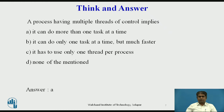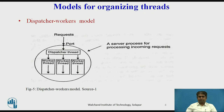The answer is A — a process having multiple threads of control implies it can do more than one task at a time. There are three commonly used ways to organize threads of a process. The first is the Dispatcher-Worker model, in which the process consists of a single dispatcher thread and multiple worker threads. The dispatcher thread accepts requests from clients and, after examining the request, dispatches it to one of the free worker threads for further processing. Each worker thread works on a different client request, so multiple client requests can be processed in parallel, as shown in the diagram.